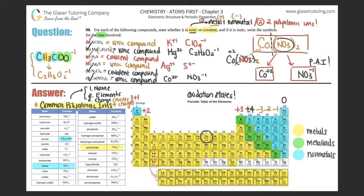To wrap up: memorize your oxidation state trends, memorize the polyatomic ions, know how to find metals and non-metals on the periodic table, and keep practicing the crisscross method — both forward and in reverse. In the next question we'll crisscross downward to find compounds. Thanks so much for watching — please click subscribe to help the channel, and like the video if this helped you out. See you in the next question!